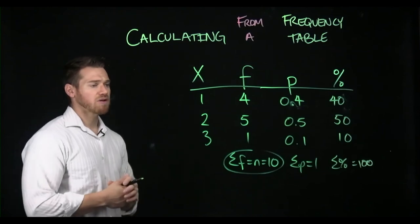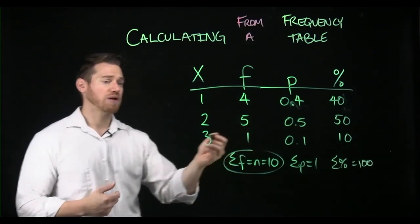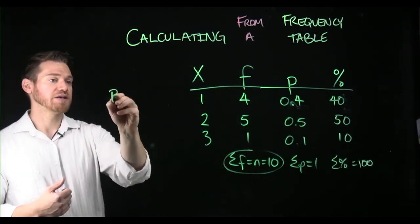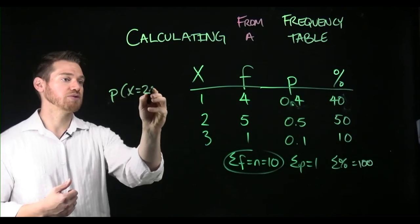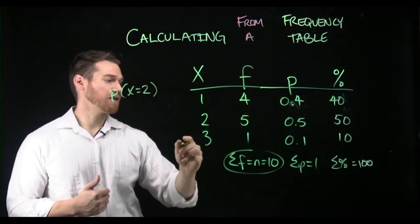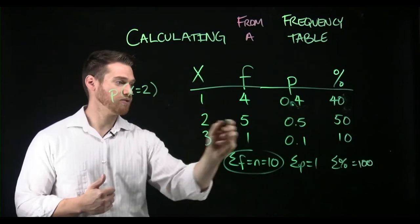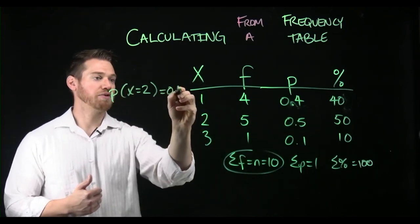So these are often used. And then if we had questions that said something like, what is P of X equals two, right? Then we would say, oh, okay, P X two, 0.5.